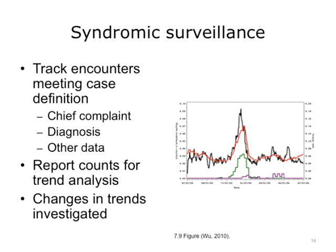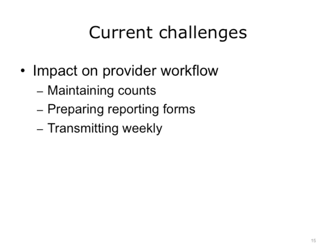One national example of syndromic surveillance employed by the CDC is ILINET — a voluntary network of providers that track the total number of encounters and encounters meeting the influenza-like illness case definition, stratified by age. CDC receives information and performs national tracking of influenza-like illness. The main challenge with maintaining a voluntary syndromic surveillance system is that provider workflow can be significantly impacted, as maintaining encounter counts, preparing data on report forms, and transmitting weekly can be challenging in a busy clinic environment when not well integrated into the clinical workflow.